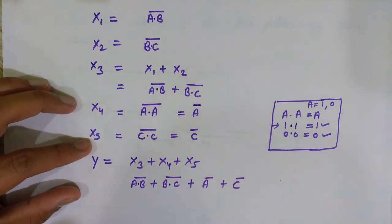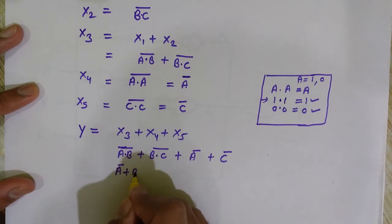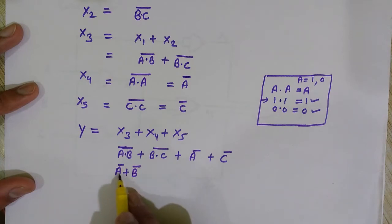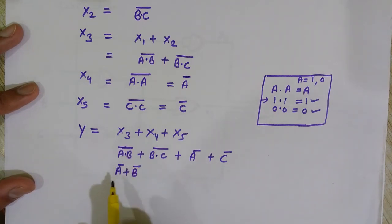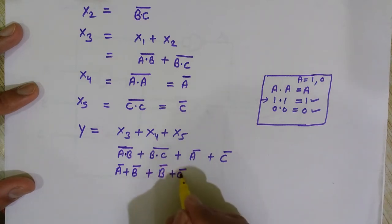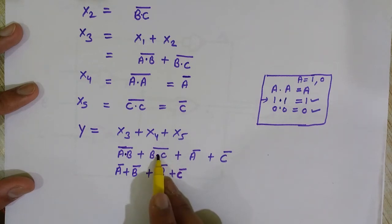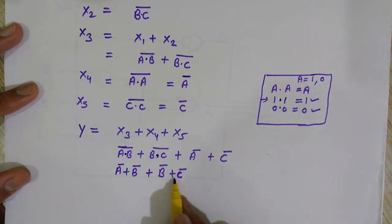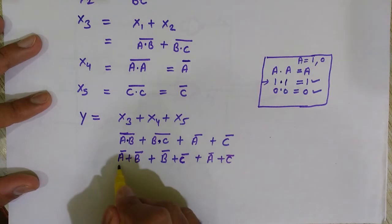Now we just need to simplify. We can write (A·B)̄ as Ā+B̄ by De Morgan's theorem — when there is a complement over a whole term, we complement each individual term and change AND to OR. So (A·B)̄ = Ā+B̄, and (B·C)̄ = B̄+C̄. x4 is Ā and x5 is C̄ as they are.